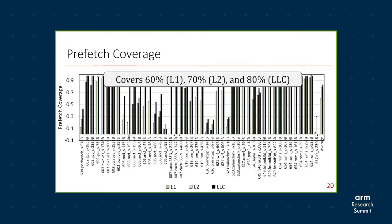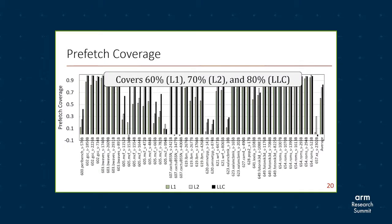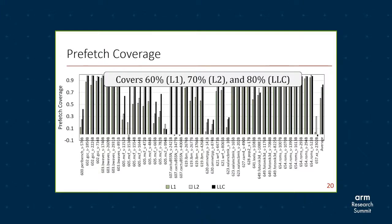Let's quickly look at the prefetch coverage — how many misses are covered by our IPCP framework. We show prefetch coverage at both L1 and L2, along with the LLC, even though we don't have a prefetcher at the LLC. On average, IPCP covers 60%, 70%, and 80% of L1, L2, and LLC misses respectively. However, there are applications like MCF and irregular applications like OMNET++ and XZ where the coverage is really low or negative — these are applications where we fail to learn the access patterns, and a temporal prefetcher could help improve coverage.